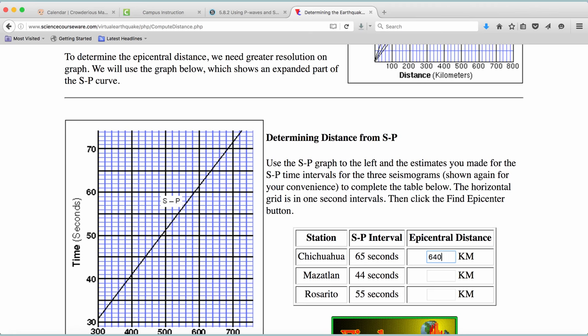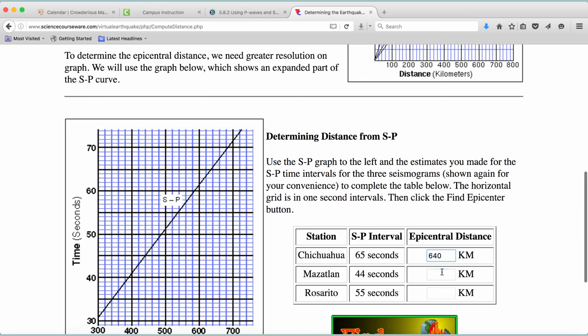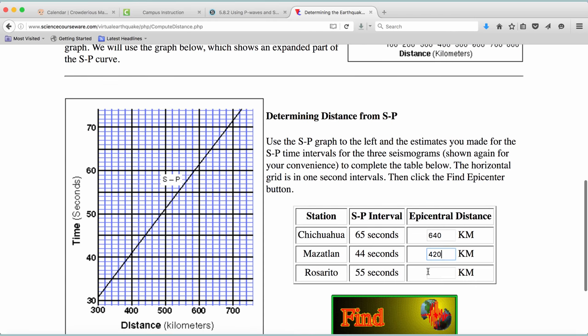Now, I look on the graph for Mazatlan's 44-second time lag. Again, I move up the graph to 44 seconds and across to the S minus P line and find a distance of 420 kilometers. And for Rosarito, I go 55 seconds up the graph and over to where it looks like 550 kilometer distance.